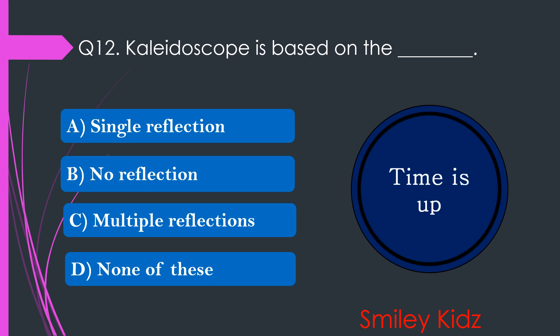Your time is up and the right answer is option C. Multiple reflections. Kaleidoscope is based on the concept of multiple reflections.